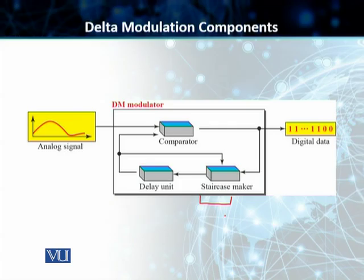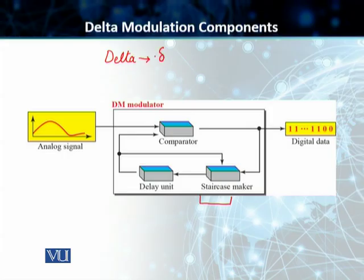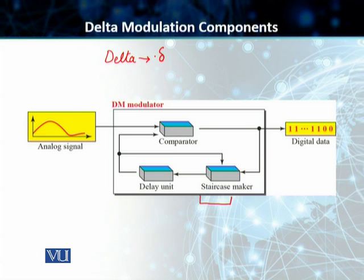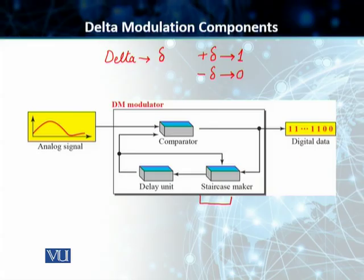The modulation process records small positive or negative changes, which are called delta, represented by the symbol delta in your book. If delta is positive — meaning the analog signal is increasing — the process records a bit of 1. If delta is negative, we record a 0. This is the same concept we covered in the basic introduction to delta modulation.